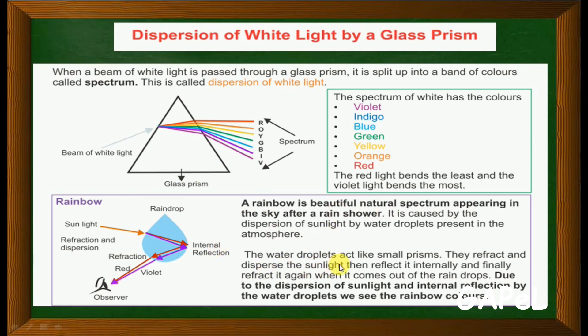They refract and disperse the sunlight, then reflect it internally by internal reflection, and finally refract it again when it comes out of the raindrop. Due to the dispersion of sunlight and internal reflection by the water droplet, we see the rainbow. This beam of white light will refract, then it will reflect - there will be internal reflection in the droplet - and when it comes out it will be refracted again.